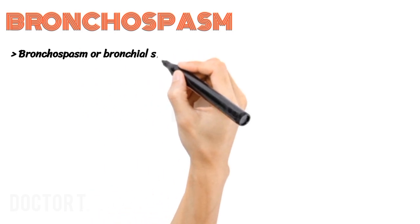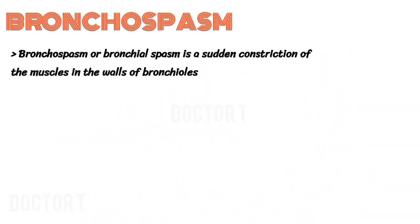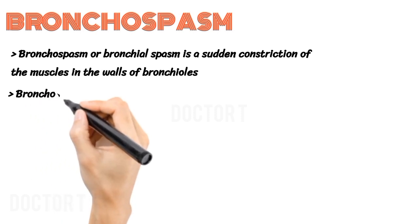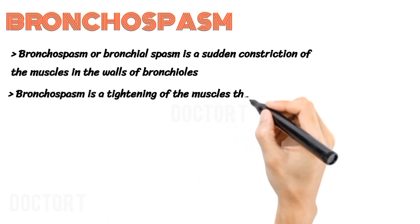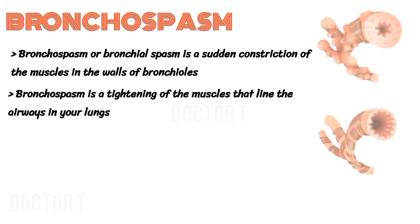Bronchospasm, or bronchial spasm, is a sudden constriction of the muscles in the walls of bronchioles. It is a tightening of the muscles that line the airways in your lungs. When these muscles tighten, your airways narrow. Narrowed airways don't let as much air come in or go out of your lungs, limiting the amount of oxygen that enters your blood and the amount of carbon dioxide that leaves your blood.